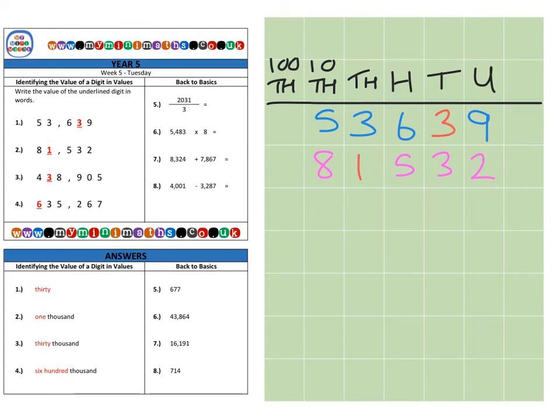This time we can see the red digit, which is the one, is in the thousands column, giving us one thousand. That's why we say eighty-one thousand.